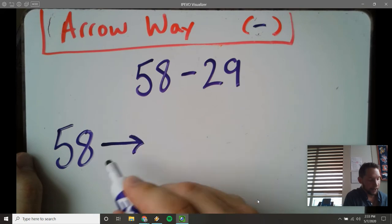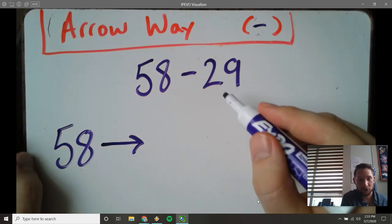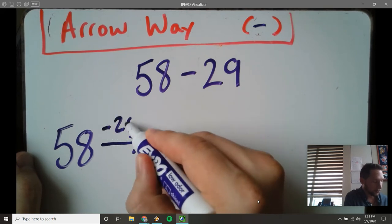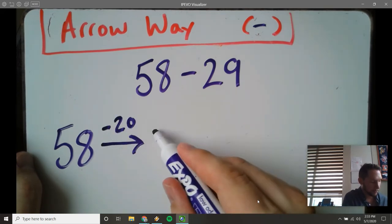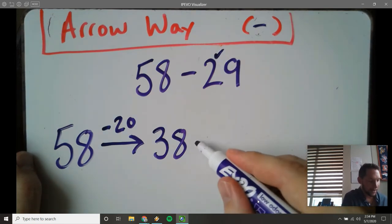And now I need to subtract. So should I take away 9 or should I take away 20? That's my choice. Maybe I'll do minus 20. 58 minus 20, 38. Okay, I've done the 20.